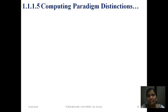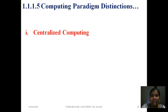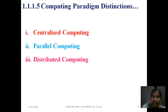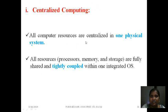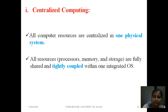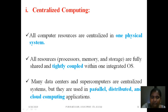Computing paradigms distinction: we can show the difference between computing models in terms of centralized computing, parallel computing, distributed computing, and cloud computing. Centralized computing means only one physical system exists — it tightly couples the processor and memory. Nobody can share a large amount of data externally; all memory is useful only to that system. The toughest part is that parallel, distributed, and cloud computing applications are not at all possible with centralized computing.